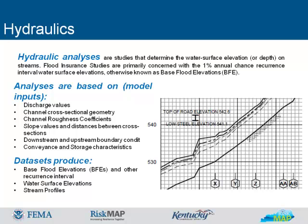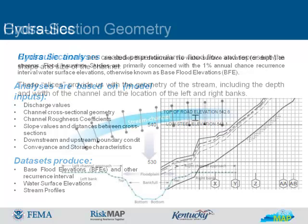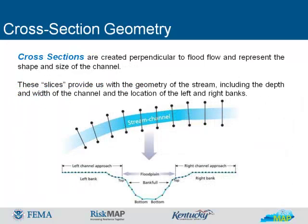Datasets produce base flood elevations, or BFEs, and other recurrence interval water surface elevations, and the water surface profiles. One of the key inputs for hydraulic analyses are cross-sections. Cross-sections are created perpendicular to flood flow and represent the shape and size of the channel. These slices provide us with the geometry of the stream, including the depth and width of the channel, and the location of the left and right banks.